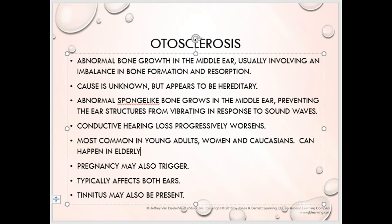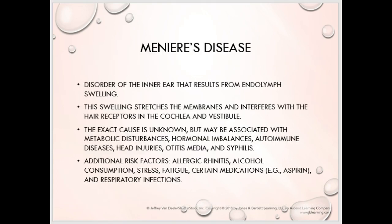Meniere's disease is a disorder of the endolymph in the inner ear. We have endolymph and perilymph filling both the hearing part of the ear — where we have the organ of Corti — and also the semicircular canals. The vestibule is simply the area between the cochlea and the semicircular canals. If you get an excessive amount of that fluid in there, it'll stretch both areas and start to push on things.